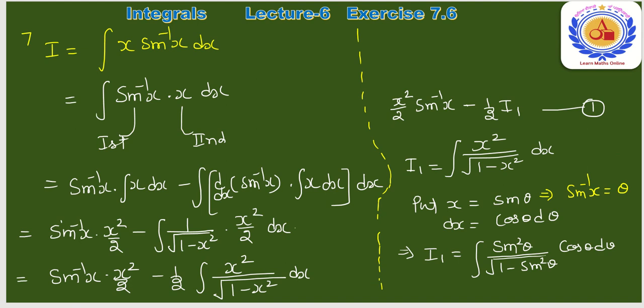Question number 7: ∫x·sin⁻¹(x)dx। Here again we take sin⁻¹(x) as first function and x as second function. Formula: sin⁻¹(x)·∫x dx − ∫[derivative of sin⁻¹(x) · ∫x dx]dx।